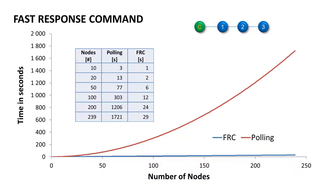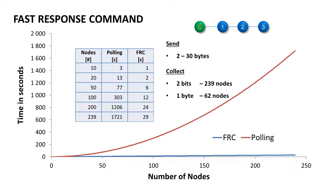Since the packet can transfer just a limited number of bytes, you can send up to 30 user bytes from the coordinator and collect 2 bits from up to 239 nodes, or 1 byte from up to 62 nodes. If you need to read 2 bytes of temperature from all nodes in your network, you can read the first byte with one FRC and the second byte with another FRC.